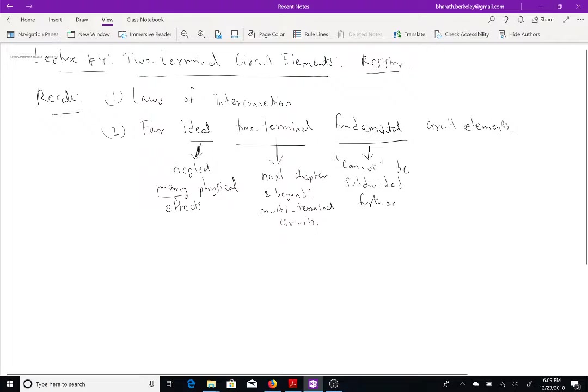And as we discussed at the end of last lecture, there are four of them, the resistor, the inductor, the capacitor, and the memristor. Now, since resistors are probably, quote unquote, the most familiar circuit element, we'll start a discussion with a resistor.